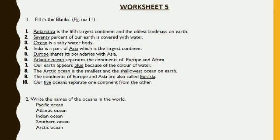Question 5: What shares its boundaries with Asia? Europe. Question 6: What separates the continents of Europe and Africa? The Atlantic Ocean. Question 7: Our Earth appears blue because of the color of water. Question 8: The Arctic Ocean is the smallest and shallowest ocean on Earth. Question 9: The continents of Europe and Asia are together called Eurasia. Question 10: Our five oceans separate one continent from the other.